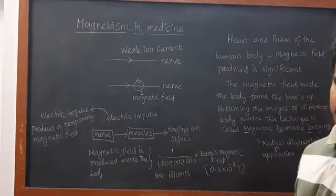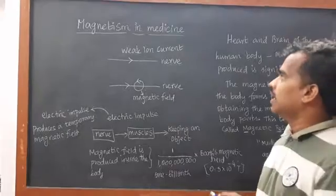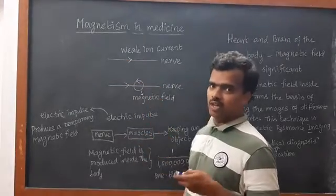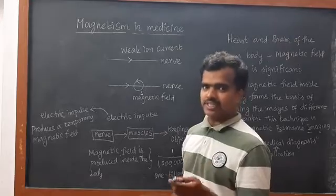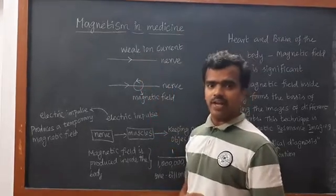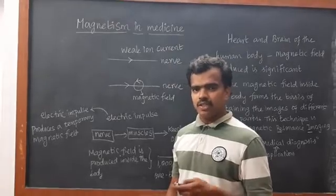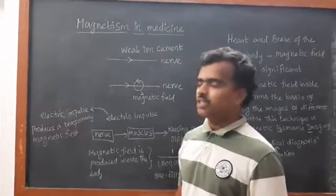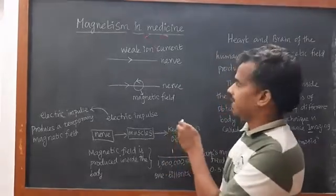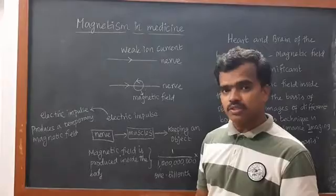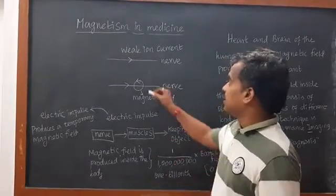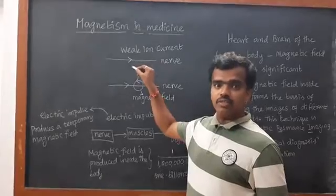So, magnetism in medicine. We have nerves — a number of nerves. In those nerves, for better understanding, I am taking just one nerve. In that nerve, we have a weak ion current. What is ion current? As you studied in electrochemistry, atoms lose electrons and become ions. Those weak ions produce current, and this ion current produces a magnetic field. We know that a current-carrying conductor definitely produces a magnetic field, and similarly, when a weak ion current passes through nerves, it will produce a magnetic field.